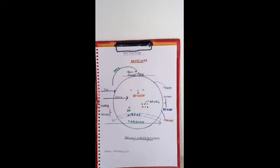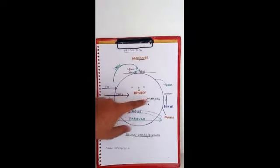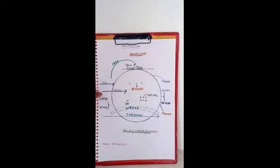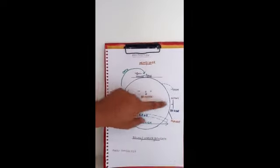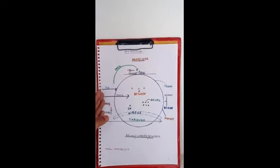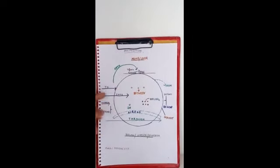INTO denotes motion towards the inside of anything. INTO में the person or body is outside of something and then enters inside it — कोई person या body किसी चीज के बाहर होती है और किसी चीज के अंदर प्रवेश करती है. Suppose this is a river — we are over here and we jump into the river. पहले हम बाहर थे, अब नदी के अंदर हैं — means our motion is from outside to inside.